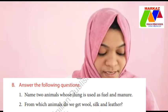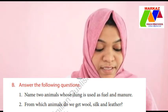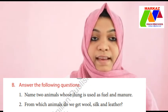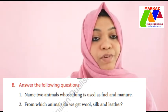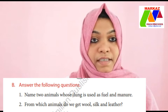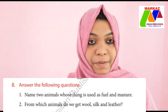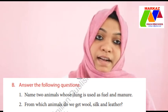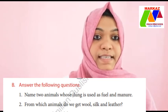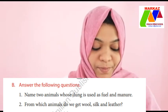Second question: from which animal do we get wool, silk, and leather? We get wool from sheep, silk from silkworm, and leather from cow — from the skin of the dead animal. You can write cow.